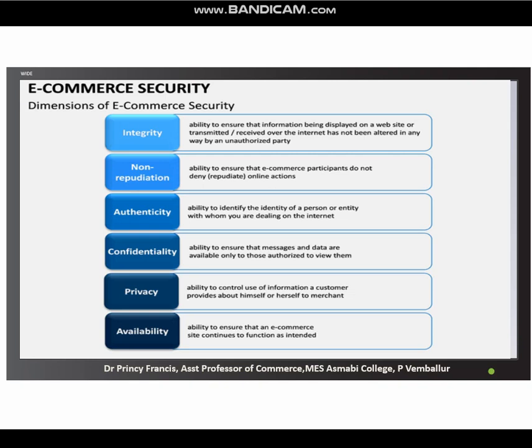Fourth, confidentiality — the ability to ensure that messages and data are available only to those authorized to view them. Fifth, privacy — the ability to control use of information a customer provides about himself or herself to the merchant. Sixth, availability — the ability to ensure that e-commerce sites continue to function as intended. This is a very important university exam question on the essential requirements of e-commerce security. Thank you.